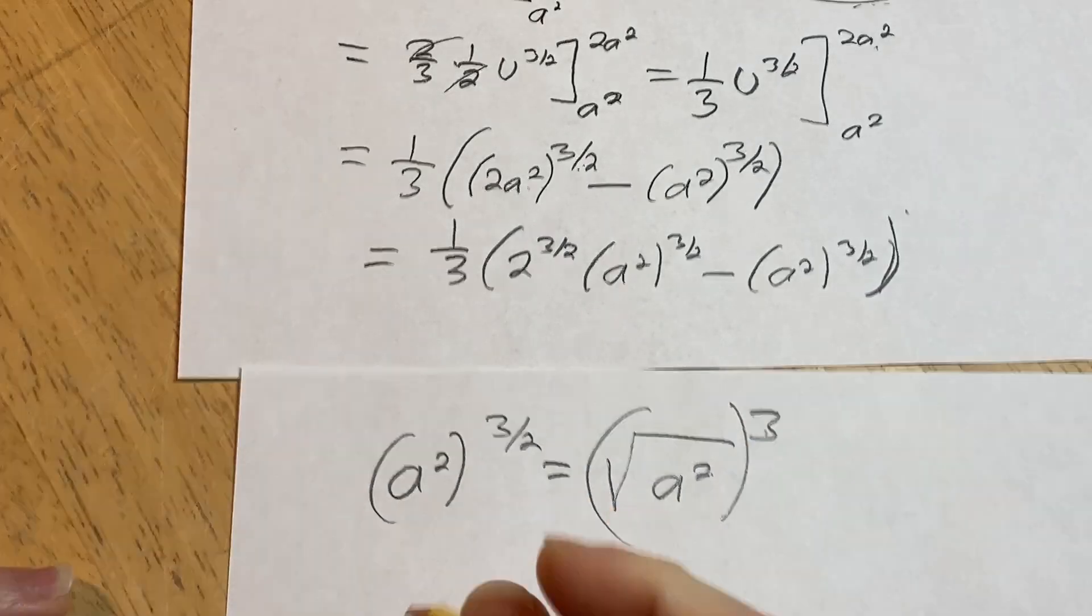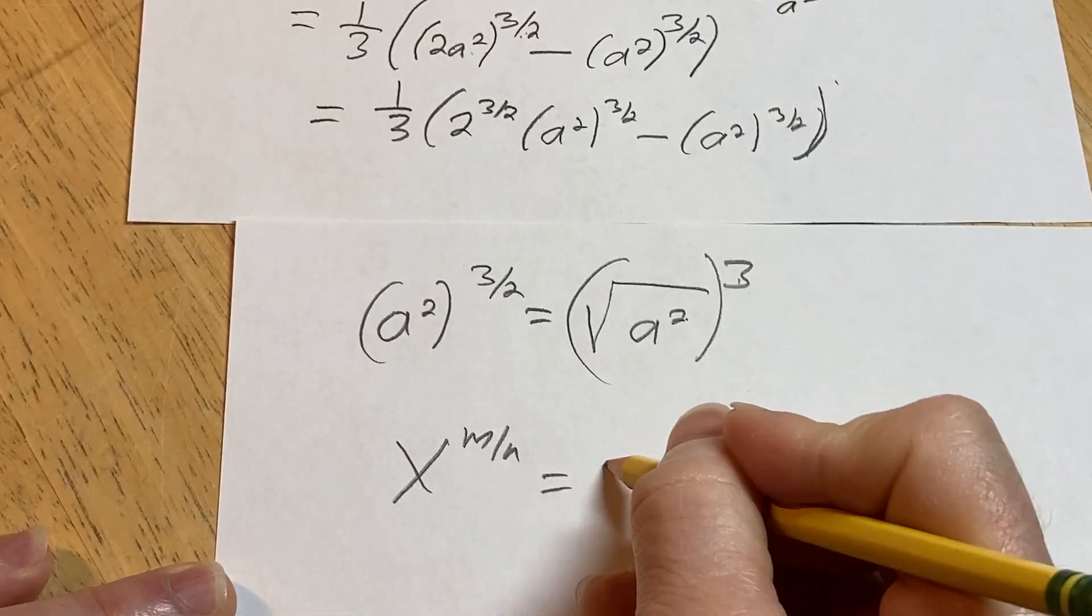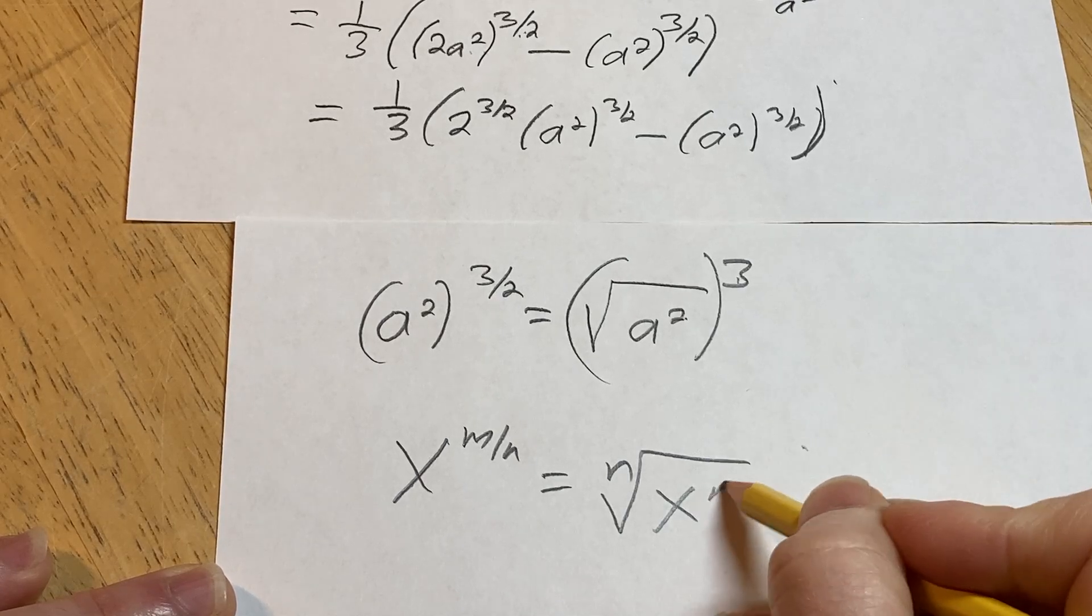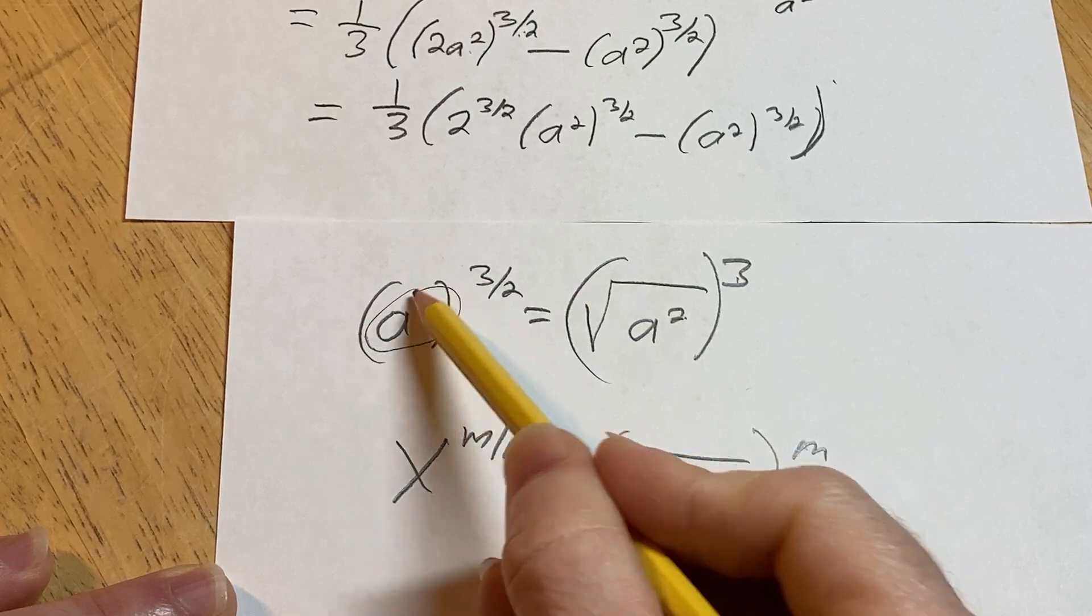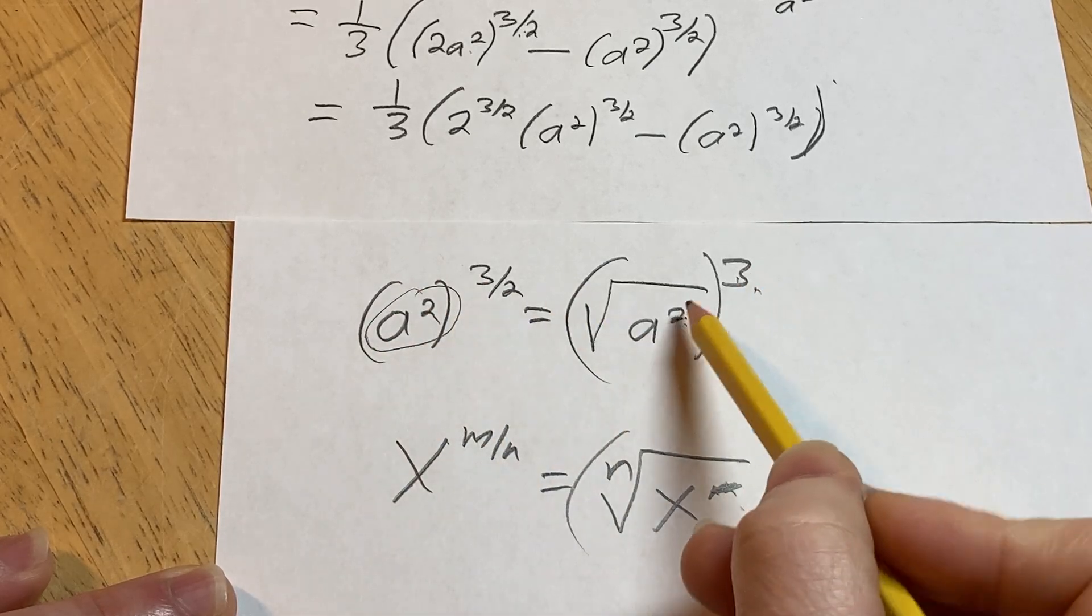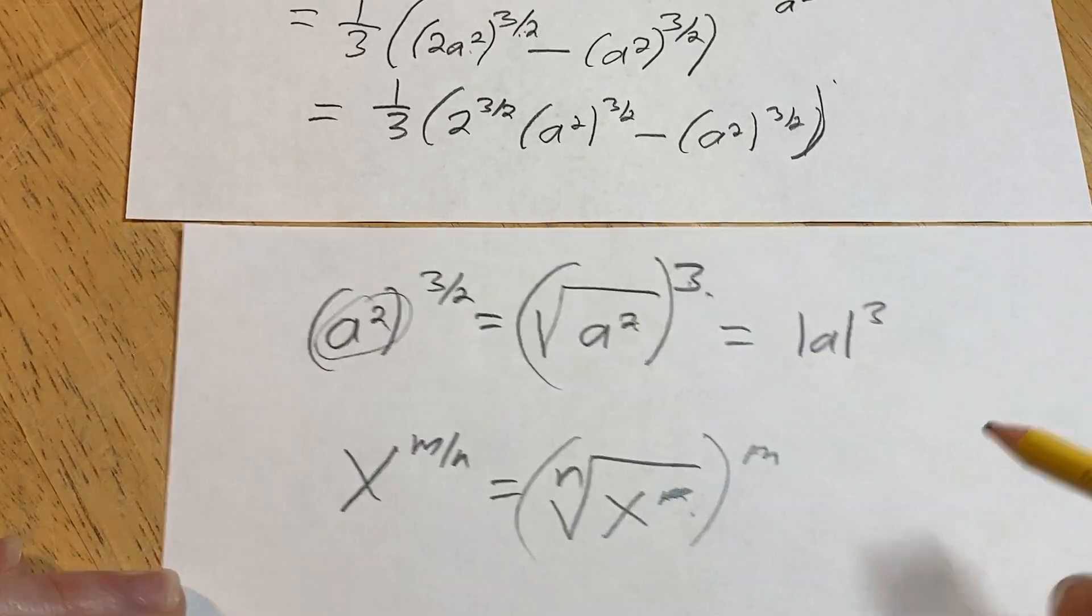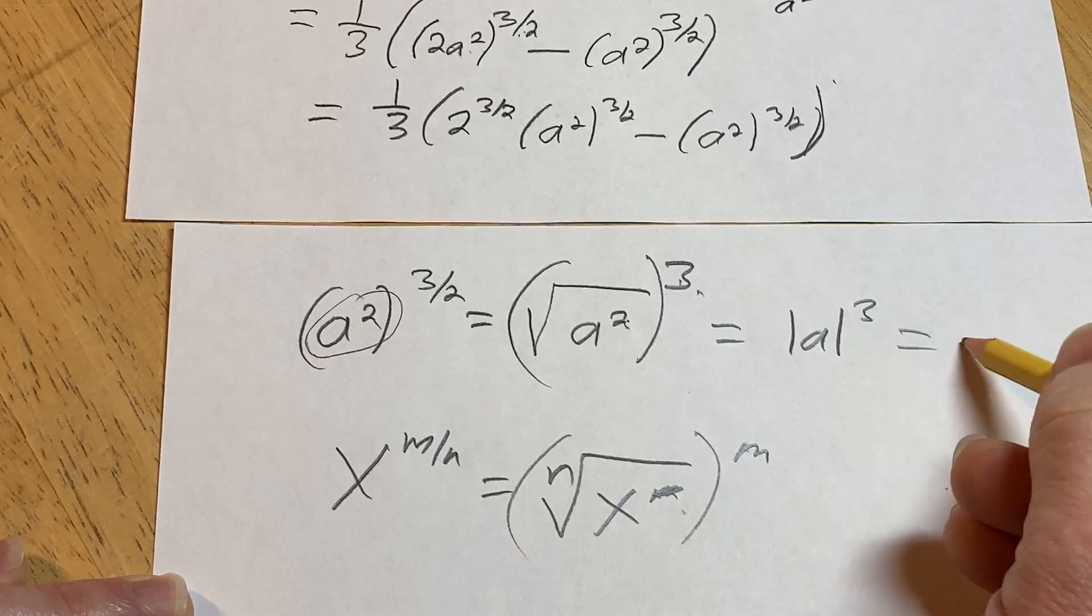So a squared to the 3 halves is the same thing as the square root of a squared cubed. Okay? You can put the 3 wherever you want. Whenever you have x to the m over n, it's the nth root of x. And you can put the m here, or I can put it here, or I can put it outside. So here, this is our x, and we just chose to put it outside. The square root of a squared is the absolute value of a. Boom! That's the key step. Because a is positive, the absolute value of a is a. So it's a cubed.